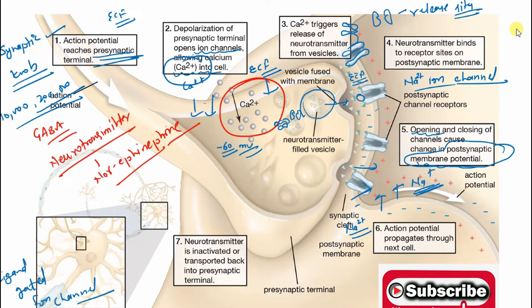Step six: action potential is propagated. The same mechanism of initiation occurs here — at minus 60 mV, which we call the threshold stimulus, the voltage-gated ion channels open, sodium influxes again, action potential is generated, and the wave of depolarization travels. This process allows one neuron cell to induce an action potential in the next neuron cell through the release of neurotransmitter.